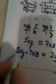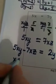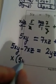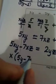Now when I look over here, I can factor out an x. In parentheses, I have 5y - 7z.